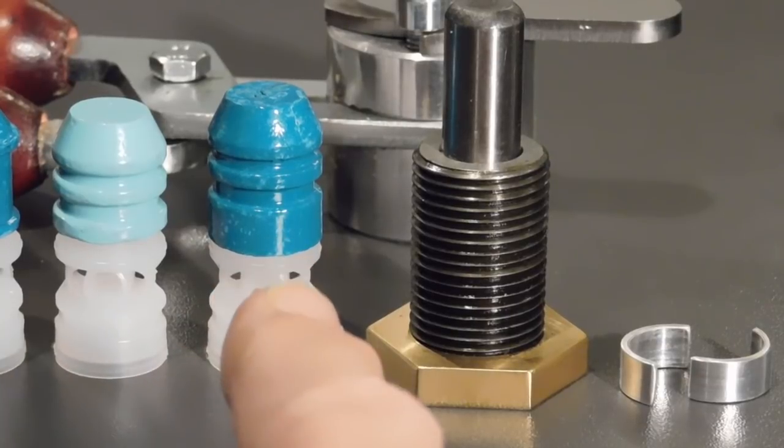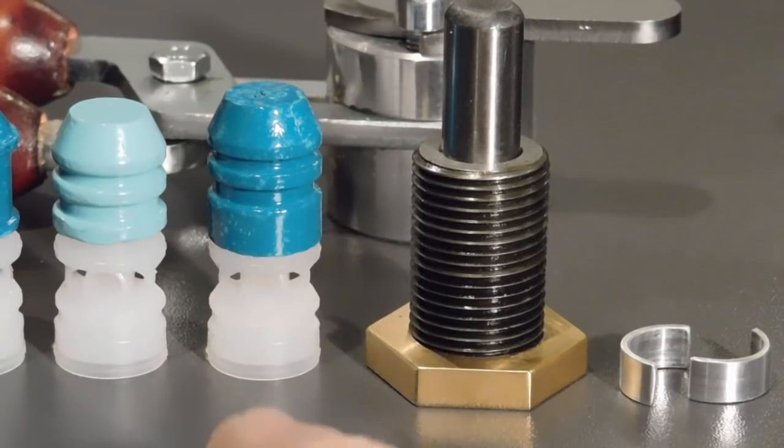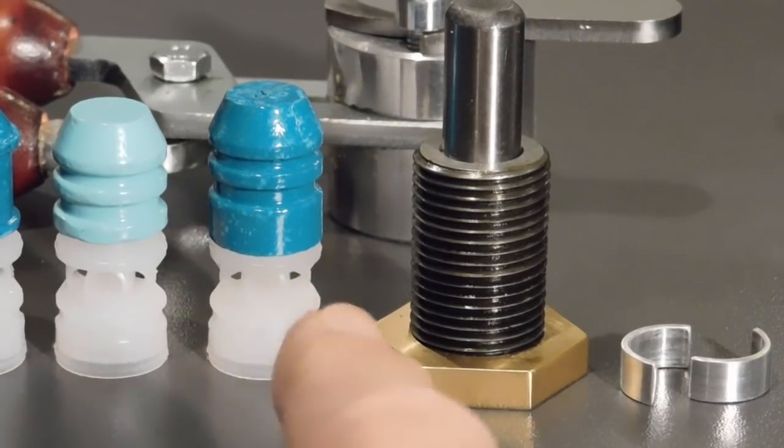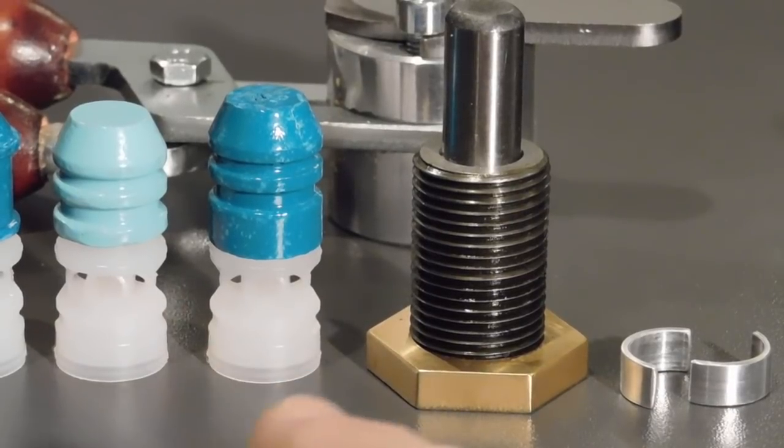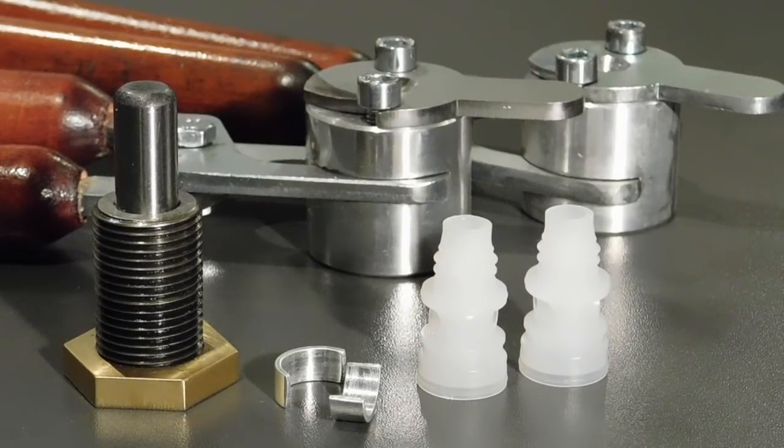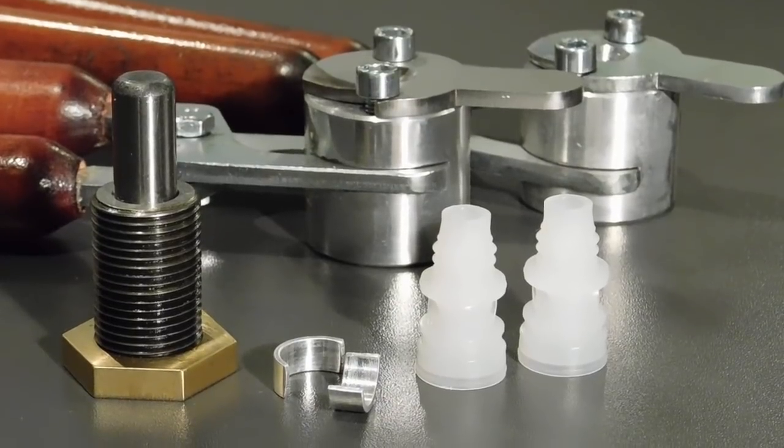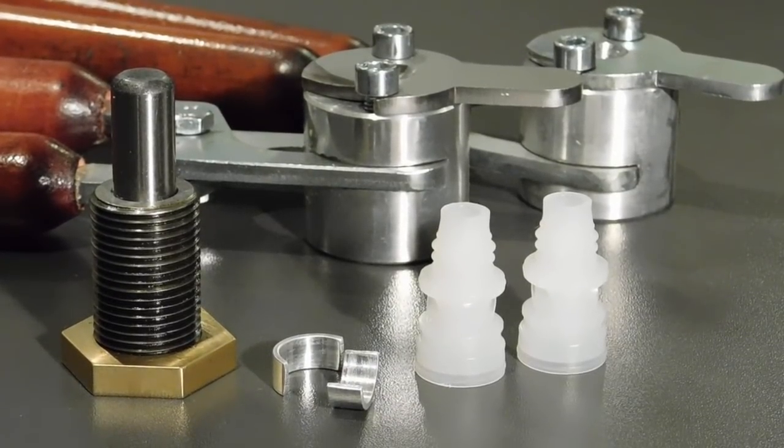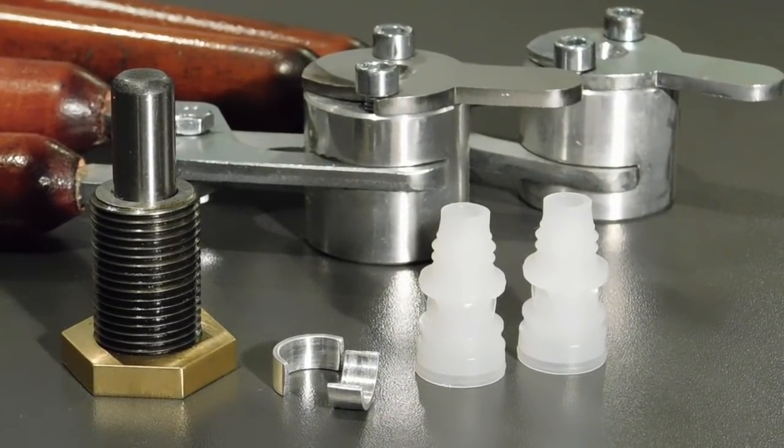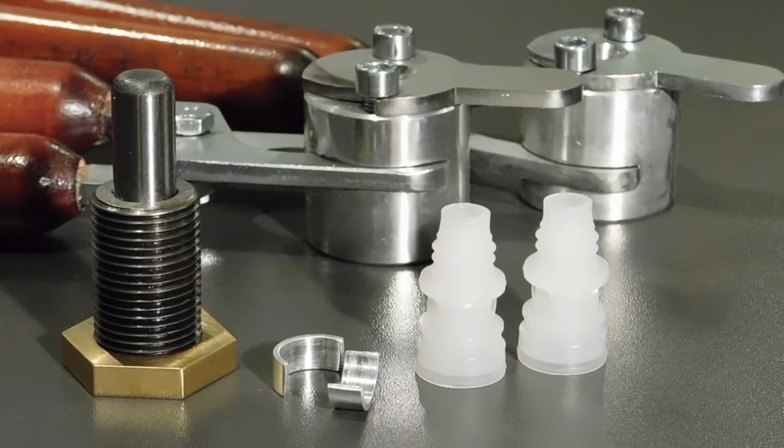Once you get the slug and wad assembled, you take the clip out and use it for the next one. Everything you see here that's required to get accurate, powerful slug loads from our reloads is available as we speak from the Reloaders Network. If you go there, there's a store that has all of this available.